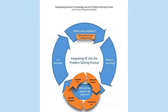We're going to look at the AT Process Framework for Schools created by Dan Cochran. The first thing we need to do is define the problem — looking at the student's reading ability and identifying what barrier is preventing them from accessing the curriculum or accessing the text.